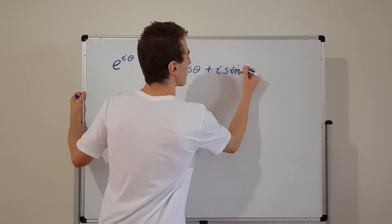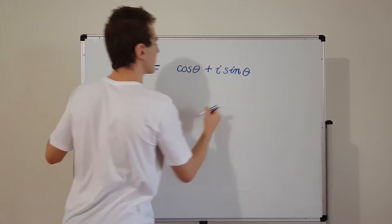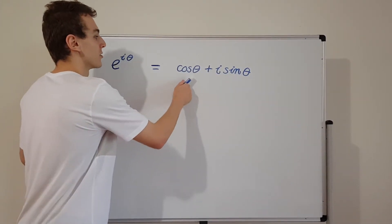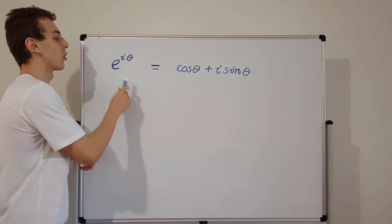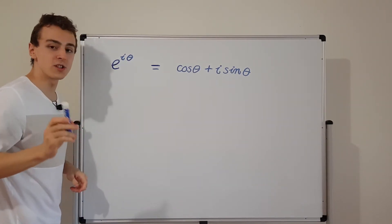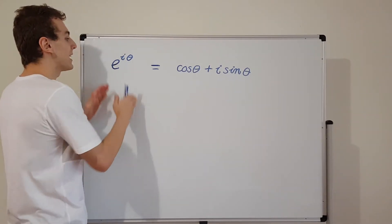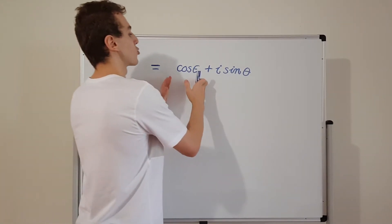We've been working with this formula a lot in the past few videos, so make sure you check out those previous videos where we actually go into a lot of detail on how you can use Euler's formula. Euler's formula is the link between complex exponentials and trigonometric functions.